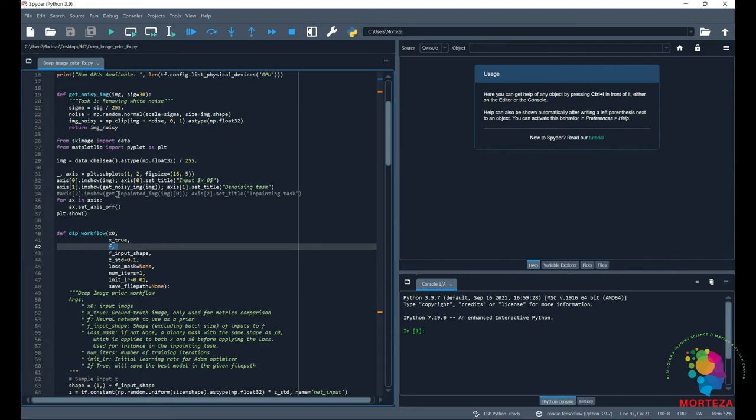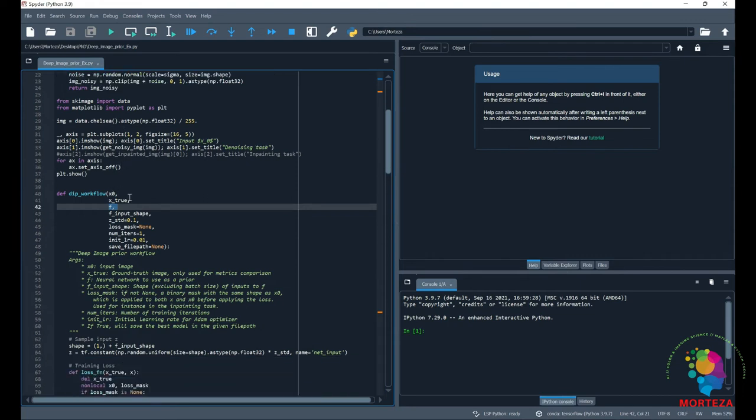We show all the images here before training the network. And these are the inputs to the network, where X0 is the noisy image, Xtrue is the ground truth image with no noise imported to it.